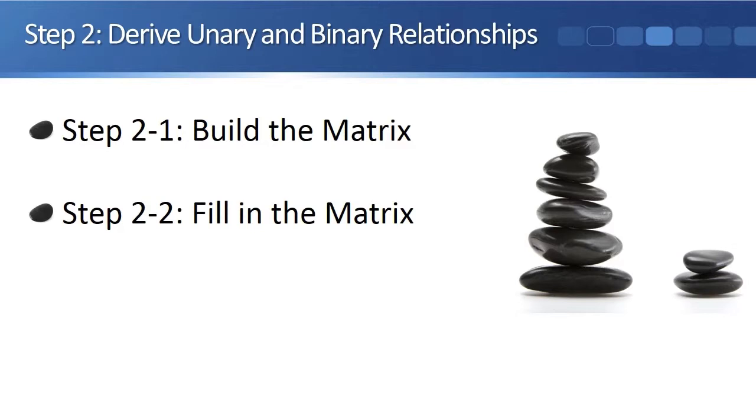An entity-entity matrix is used to derive all of the unary and binary relationships that can exist between all of the discovered entities.